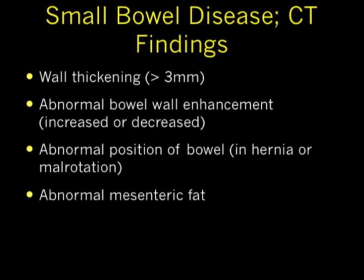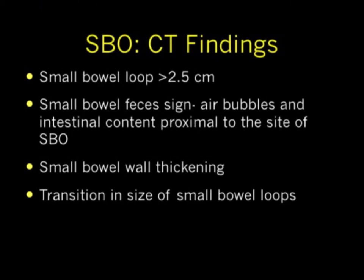In terms of looking at CT for SBO, what do we look at? Wall thickening over 3 millimeters, abnormal wall enhancement — which could be increased or decreased, what we call white bowel and dark bowel. We look at positioning of the bowel: is it in a hernia, is there malrotation? And what about the mesenteric fat — inflamed mesenteric fat, collections in mesenteric fat, all suggestive of a process. For individual bowel loops, we talk about a loop over 2.5 centimeters and the feces sign, meaning air bubbles and intestinal content proximal to the site of obstruction.